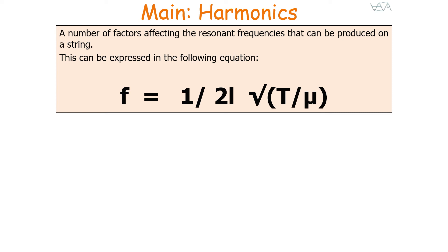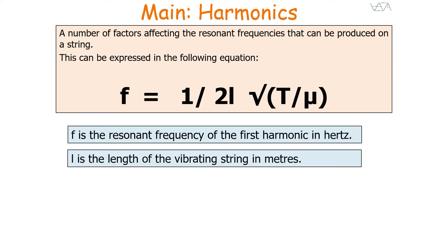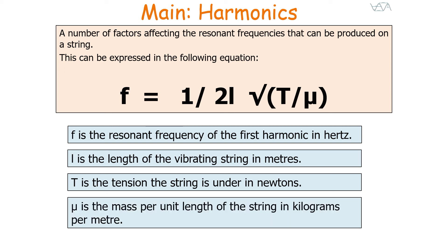In this equation, f is the resonant frequency of the first harmonic in hertz. L is the length of the vibrating string in metres. T is the tension the string is under in newtons. And μ is the mass per unit length of the string in kilograms per metre.